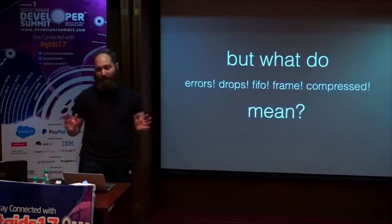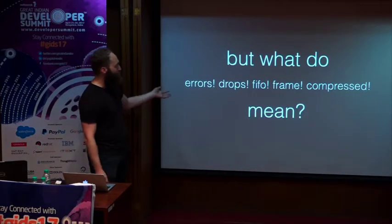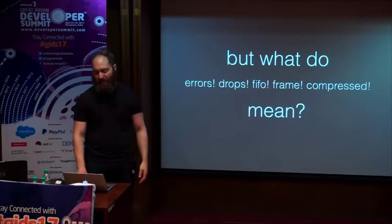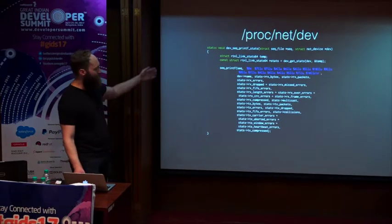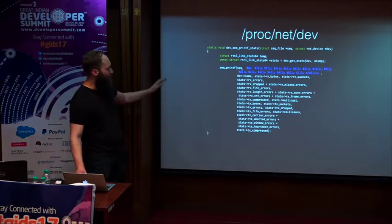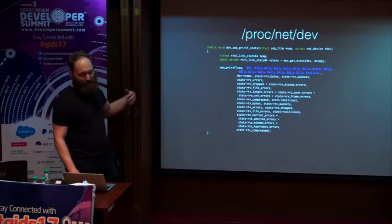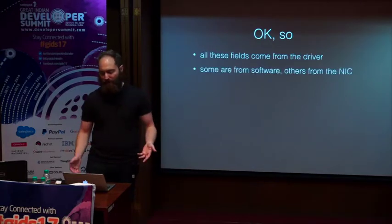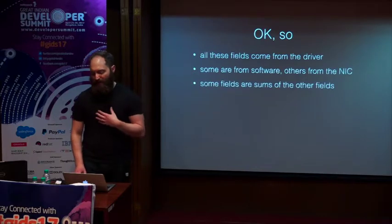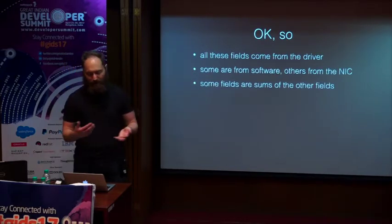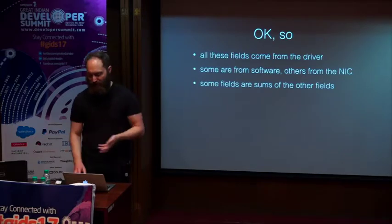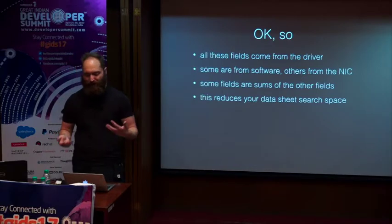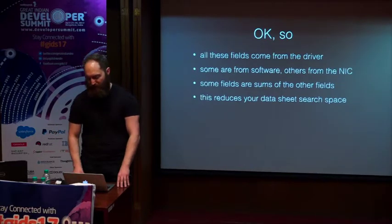Fair enough — maybe that's all you care about. But what do errors, drops, FIFO, frame, and compressed actually mean? To find out, you have to dig into the kernel source code. It turns out that all these fields come from the device driver itself — again, some from software, others from hardware. Some of the fields like errors and drops are actually sums of other fields, which reduces your data sheet search space somewhat. But it becomes painful if you have lots of different network devices in production, because different drivers don't agree on what each individual statistic actually means.